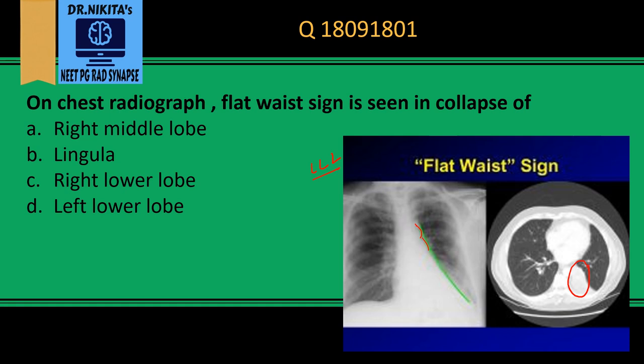This occurs because in left lower lobe collapse, the heart is displaced to the left and rotated, causing loss of the normal contour — giving the flat waist sign. It is seen in left lower lobe collapse.